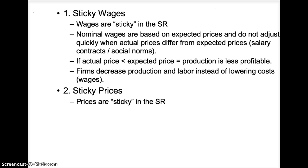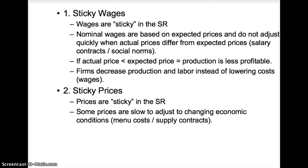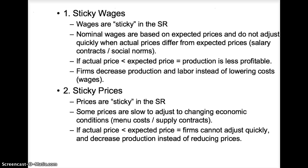The second theory is sticky prices. Some prices are slow to adjust to changing economic conditions due to the menu cost of changing prices or due to supply contracts. If actual prices are less than expected prices, firms cannot adjust quickly; therefore, they decrease production instead of reducing prices.